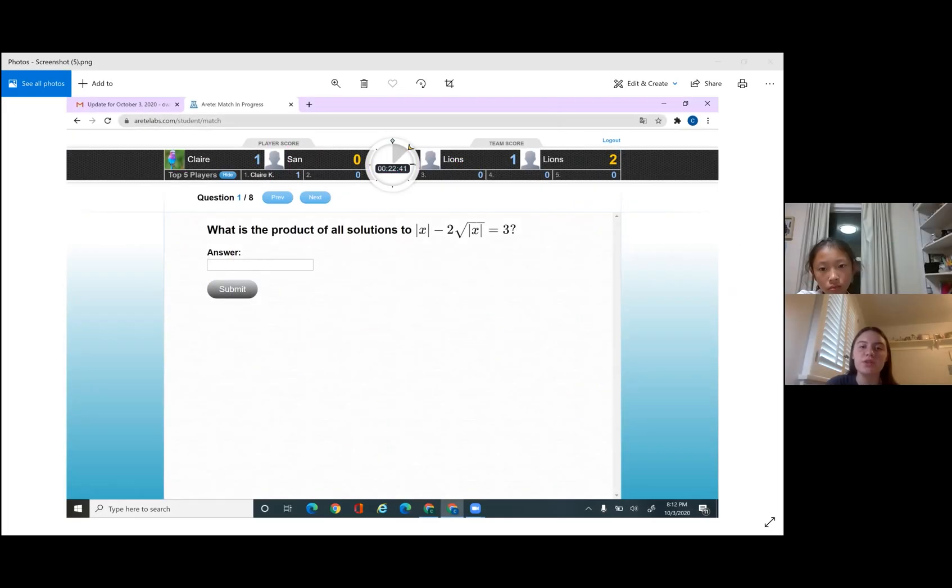So for a second, plug in 9 as the x's. Okay. And so we know that 9 as x works because it would be the absolute value of 9, which is just 9 because 9 is positive, minus 2 times 3 equals 3, because that's 9 minus 6 equals 3, and that is correct.